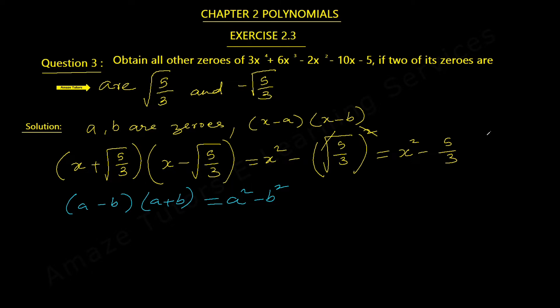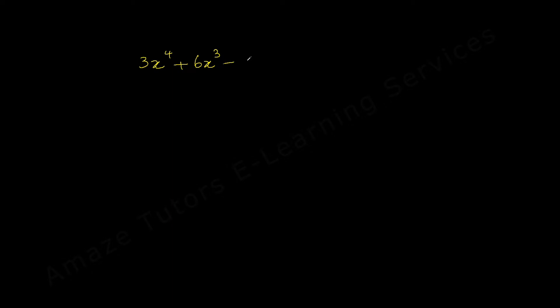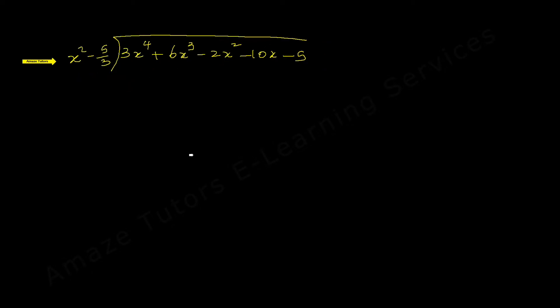Now we are going to divide the original equation by this quadratic factor to get the other two roots. We divide 3x⁴ + 6x³ - 2x² - 10x - 5 by x² - 5/3. The first step in polynomial division is to divide the first monomial of the dividend by the first monomial of the divisor: 3x⁴ divided by x² gives 3x², which is the first term of the quotient.